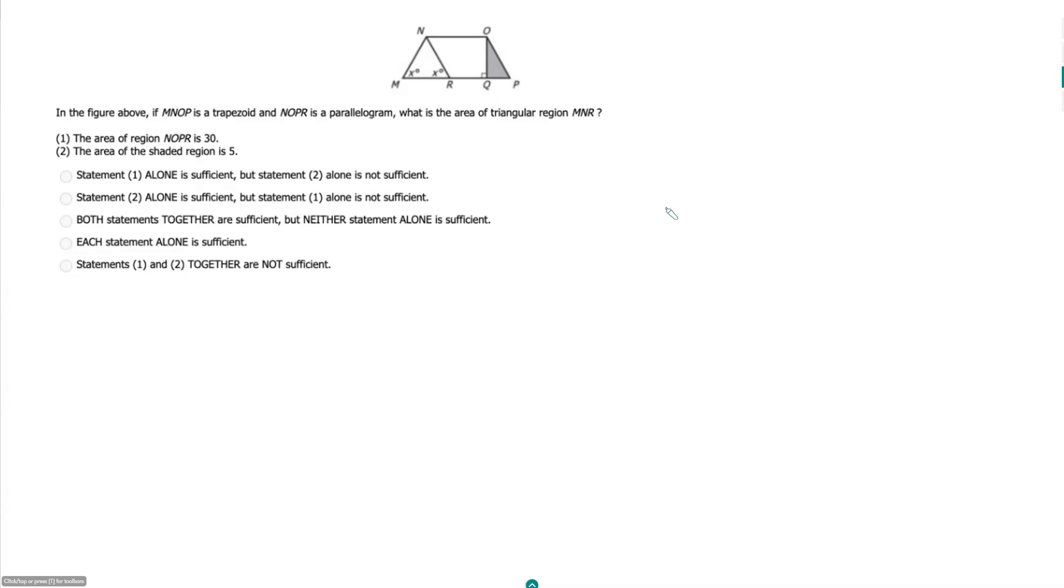In the figure above, if MNOP is a trapezoid and NOPR is a parallelogram, so it's this parallelogram within the trapezoid, what is the area of triangular region MNR?